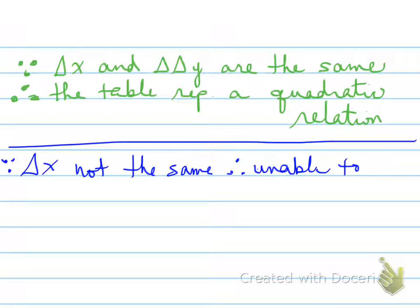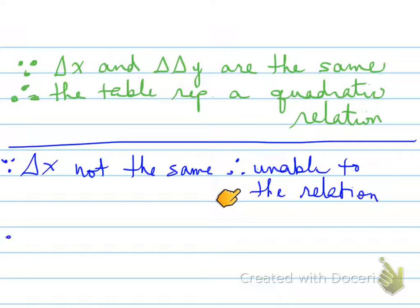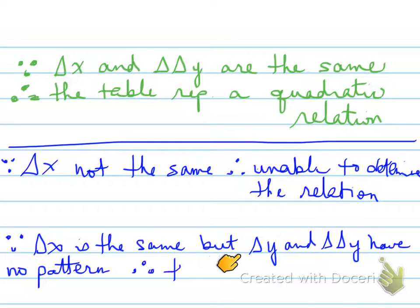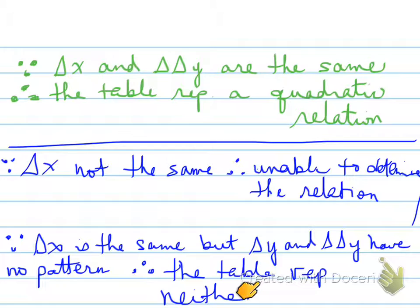Let's cover other possible answers. If delta x is not the same, then since delta x is not the same, we write: therefore, unable to determine the relation. The other option is if delta x is the same, but delta y and delta delta y have no pattern — therefore, the table represents neither. Those are the two additional cases you may see on a quiz or test.